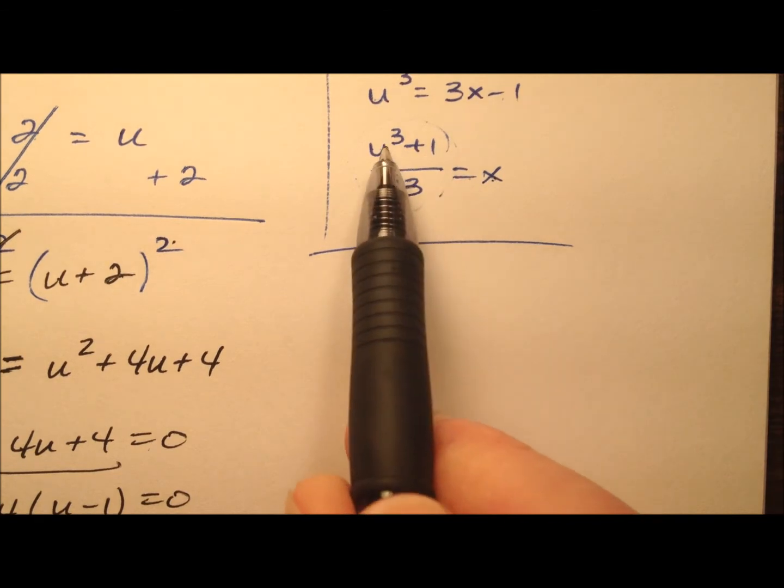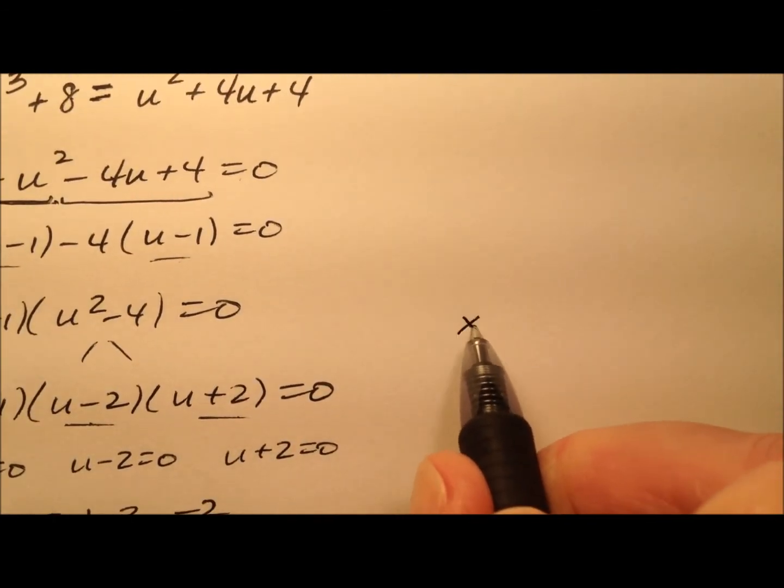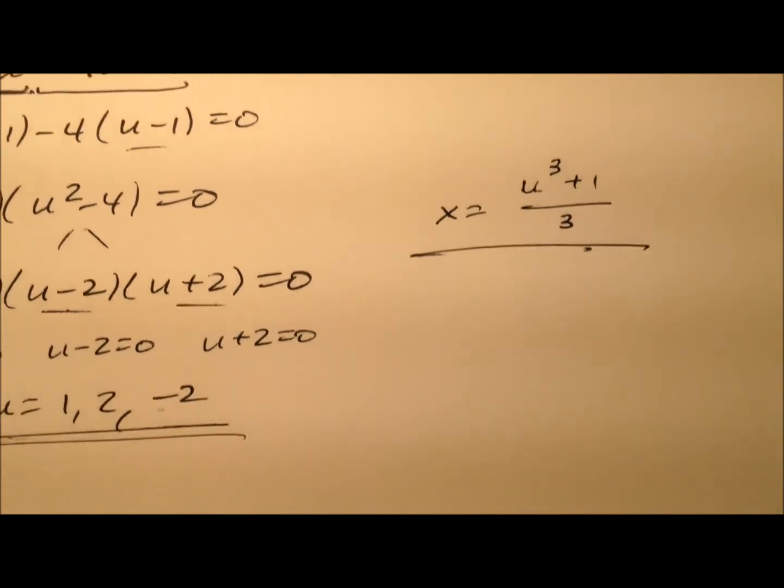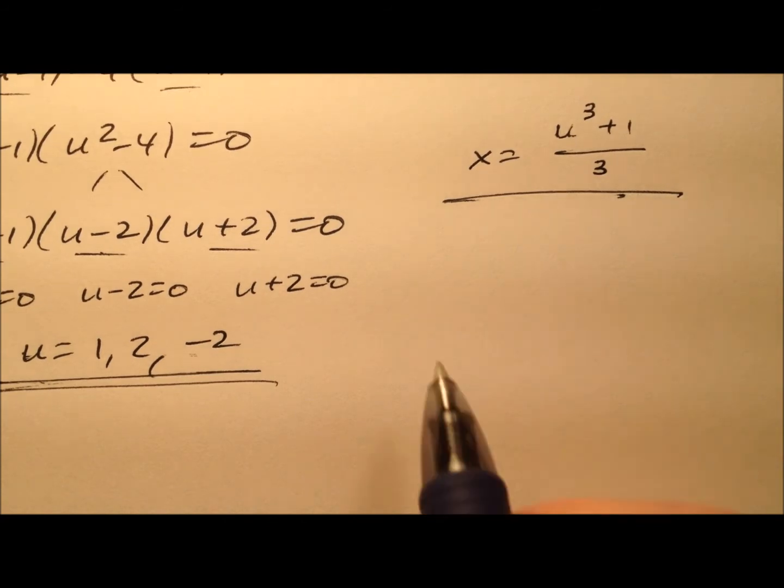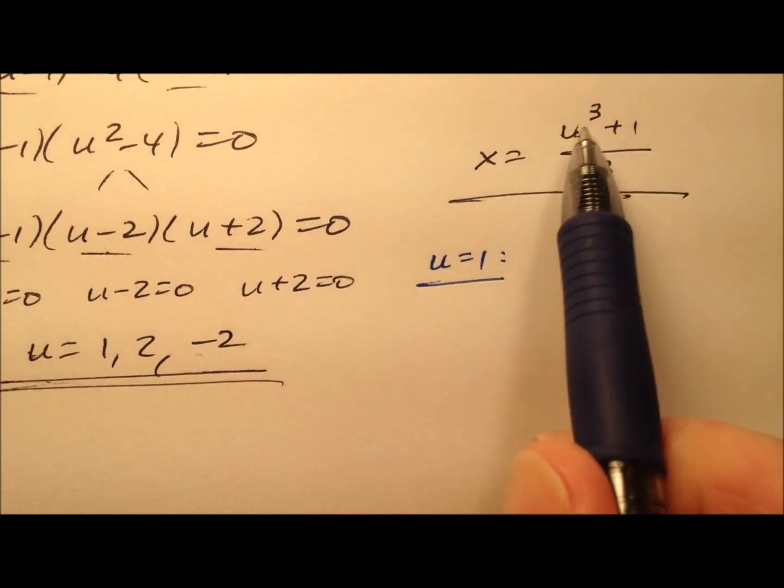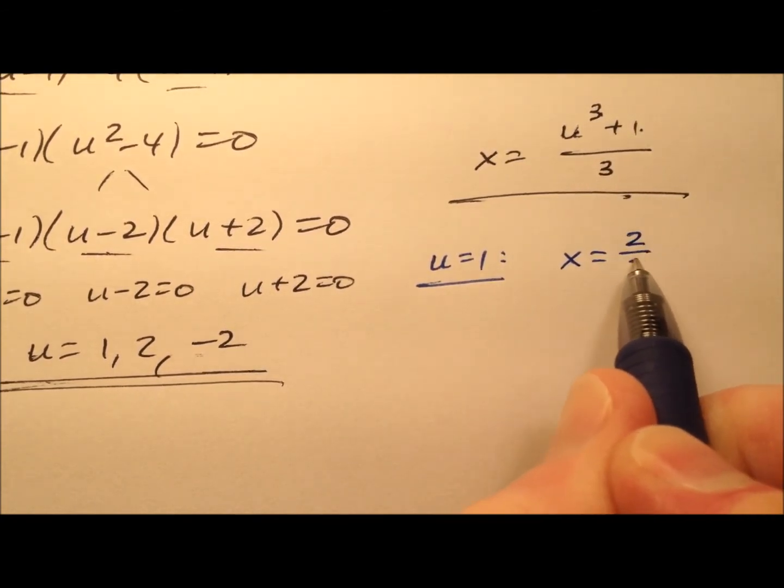So x equals u cubed plus 1 divided by 3. So I'll rewrite that here. And then let's go ahead, just do one at a time. So when u equaled 1, 1 cubed is 1 plus 1 is 2, so 2 thirds. So x equals 2 thirds.